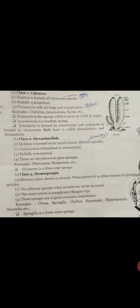Canal system is branched or unbranched, both types can occur. These are radially symmetrical. Also known as glass sponges. These are exclusively marine.